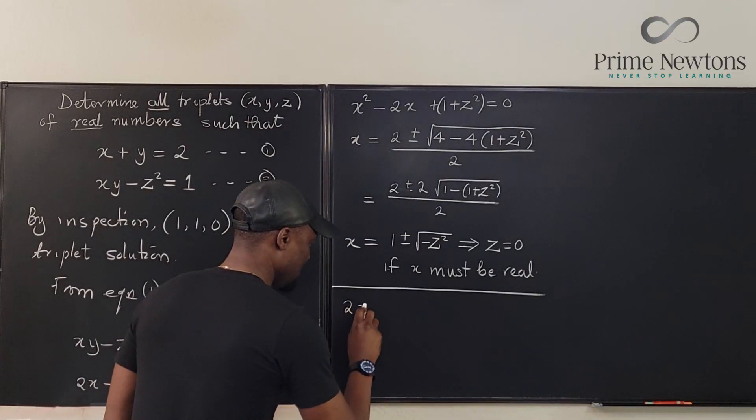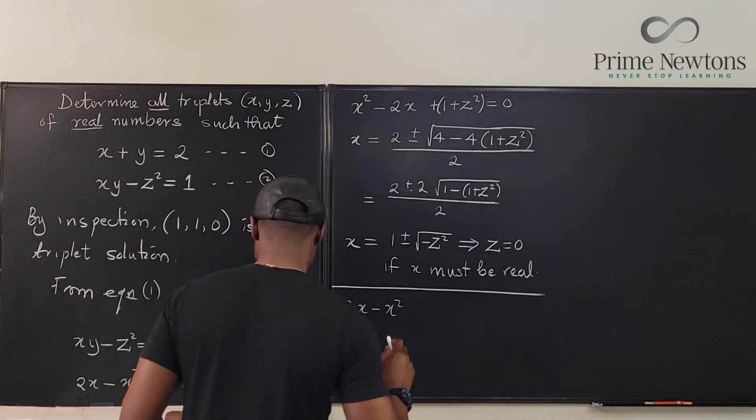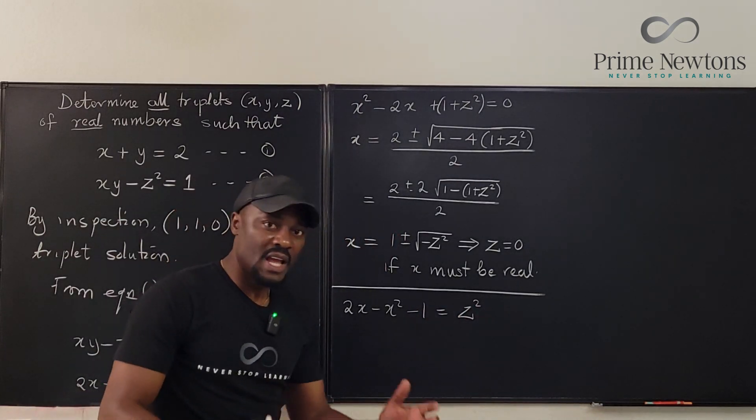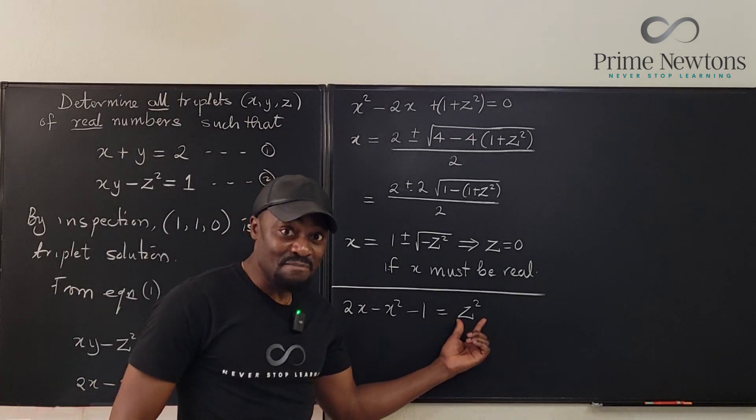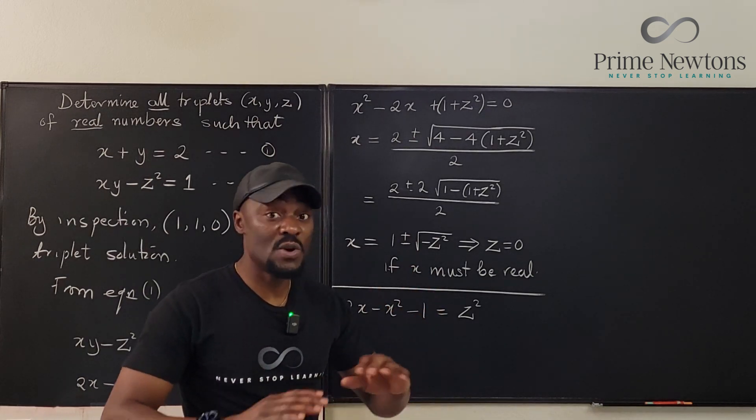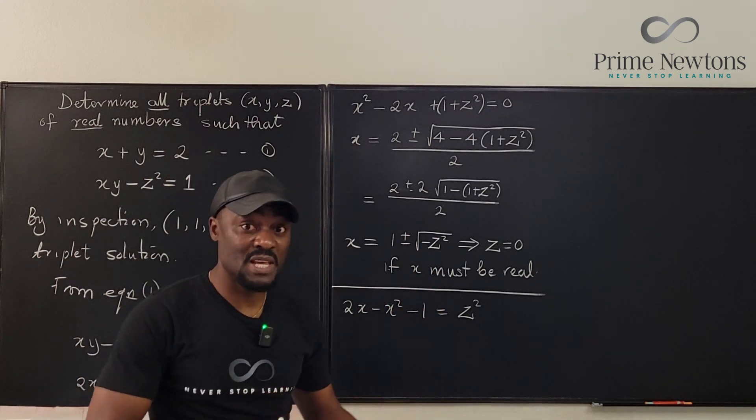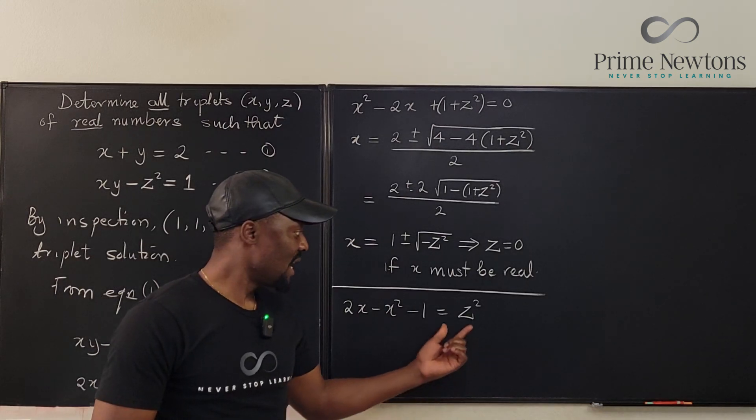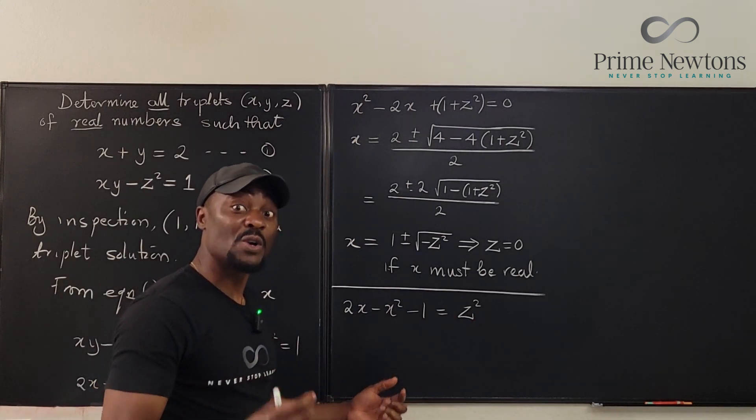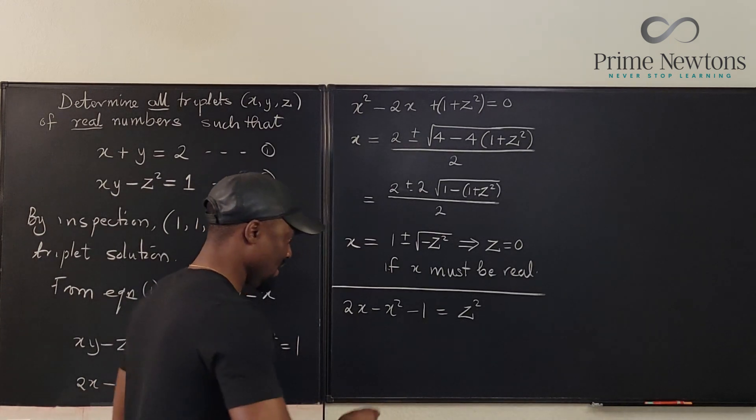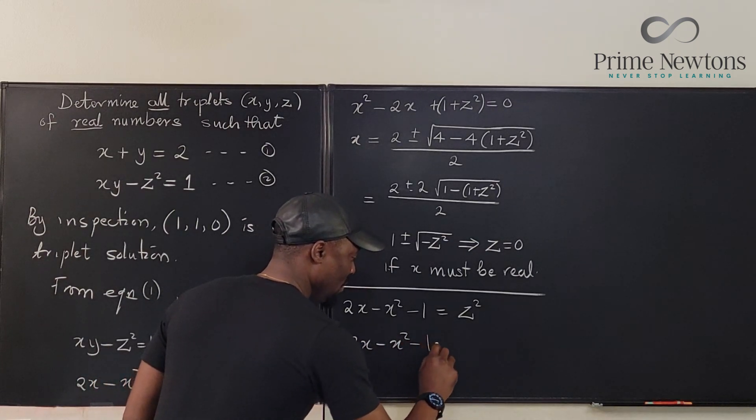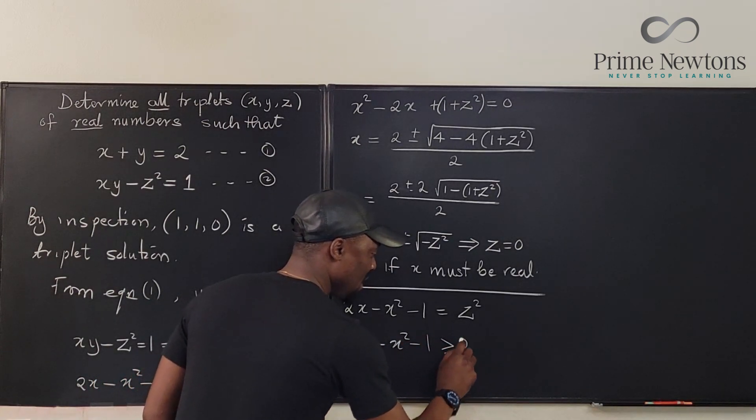We're going to have 2x minus x squared minus 1 equals z squared. Now, if z must be a real number, the square of z must be non-negative. The worst it can be is 0, it cannot be a minus number. So that means whatever we have on the left-hand side has to be 0 or greater than 0. So this means 2x minus x squared minus 1 must be greater than or equal to 0.